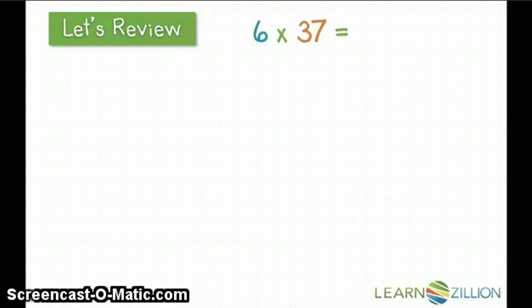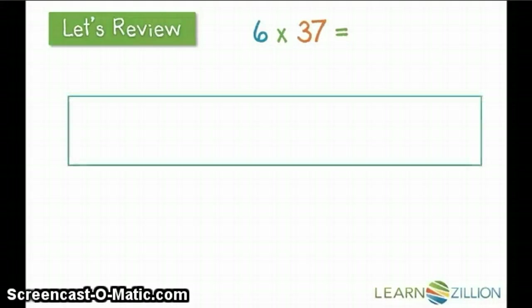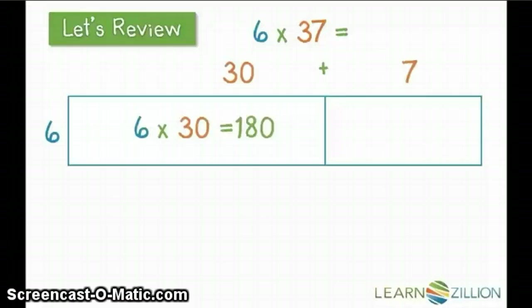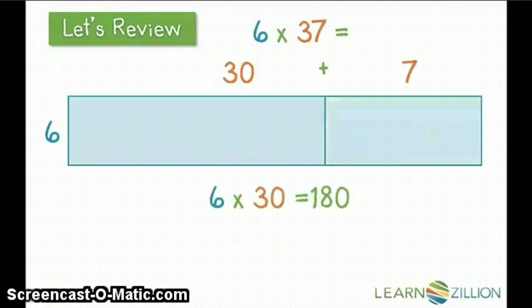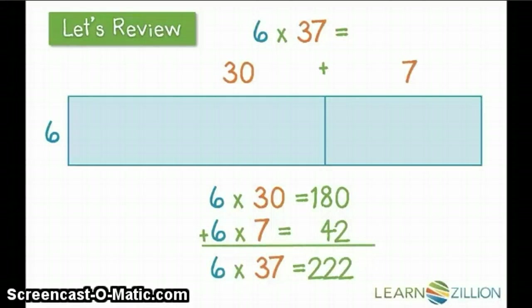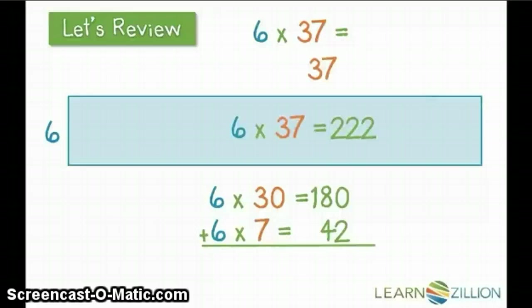This problem says we're finding the total of six groups with 37 in each group. We take our two-digit number, break it up using expanded notation, along with the area model, to multiply each place individually. Then we add those two sections back together to find our total product. In this case, it's six groups of 37, totals 222. So our final product, 222.